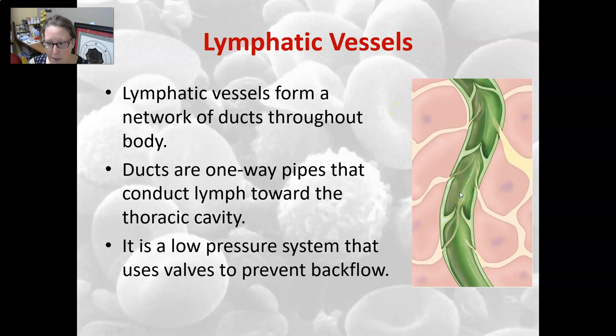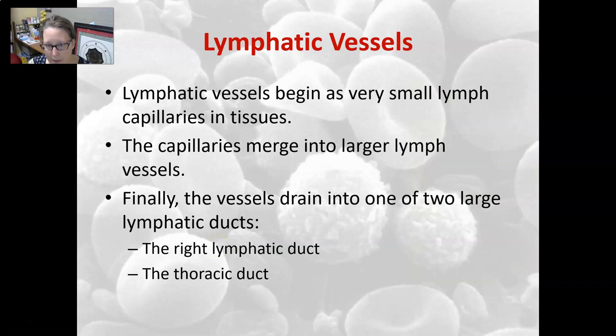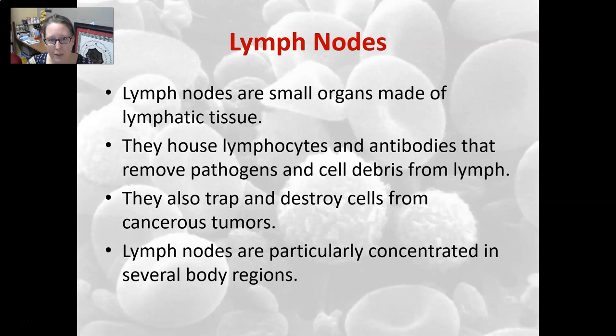The lymphatic vessels begin as very small lymph capillaries in the tissues. The capillaries merge into larger lymph vessels, and then the vessels drain into one of two large lymphatic ducts — the right lymphatic duct and the thoracic duct — which then merge into the venous circulation.